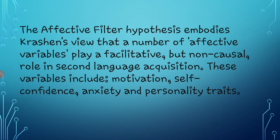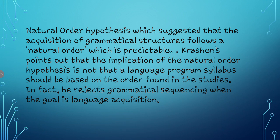The last one is the natural order hypothesis. The natural order hypothesis suggests that the acquisition of grammatical structures follows a natural order which is predictable. Krashen points out that the implication of the natural order hypothesis is not that a language program or syllabus should be based on the order found in the studies. In fact, he rejects grammatical sequencing when the goal is language acquisition.